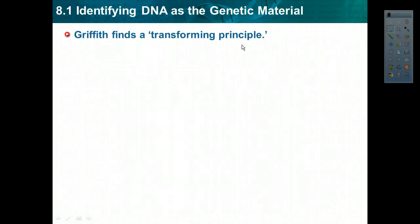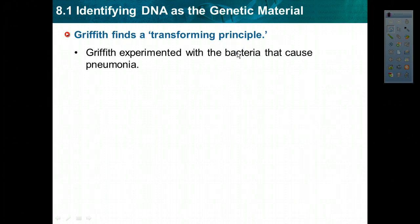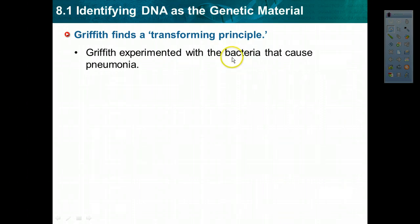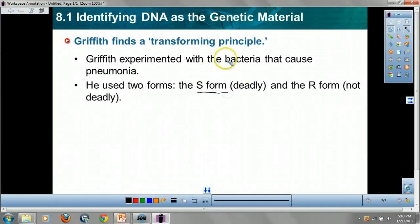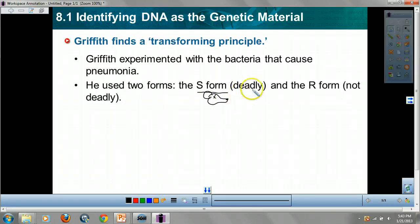The first guy we want to talk about is Griffith. His team experimented with a bacteria that caused pneumonia. If you've ever had pneumonia, it's no joke. This bacteria caused death in mice. He had two forms: the S form, which was deadly — lights out for the mouse — and the R form, which was not deadly. Happy camper.